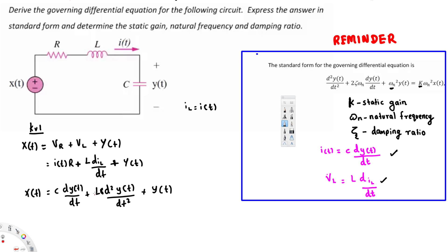In the standard form of a second-order ODE, there should be no coefficient in front of the second-order term. To eliminate the LC coefficient, we divide everything by LC. Dividing gives: d²Y(t)/dt² + (R/L) · dY(t)/dt + (1/LC) · Y(t) = (1/LC) · X(t).